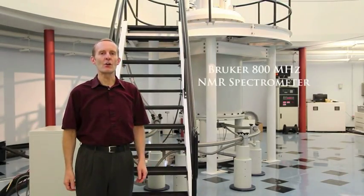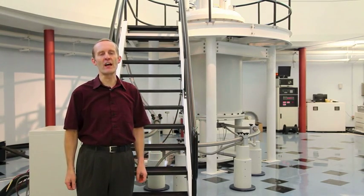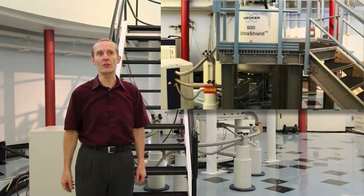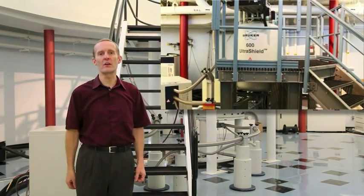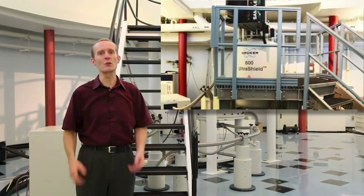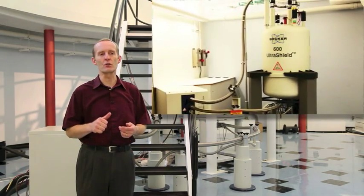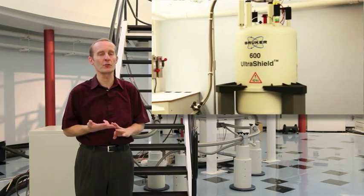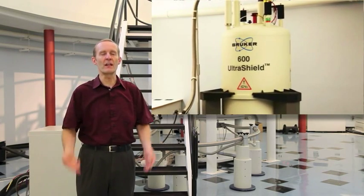In addition to the 900 and the 500 MHz spectrometer that we have just seen on the other side of the room, we also have two nice 600s, one with a sample changer where we also can do all these screenings, and another one that has, in addition to the proton, nitrogen, carbon, also a phosphorus channel, which is often helpful for RNA and DNA work.